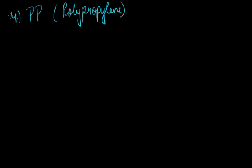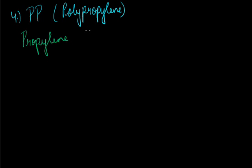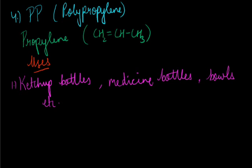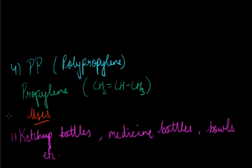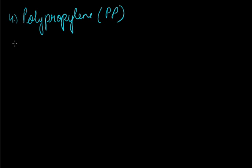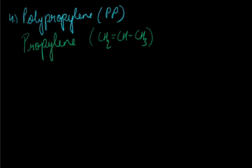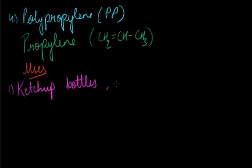The next plastic is PP — polypropylene. The monomer unit is propylene, and polypropylene is formed by the condensation of propylene units. Uses of polypropylene include ketchup bottles, medicine bottles, and hardware items.